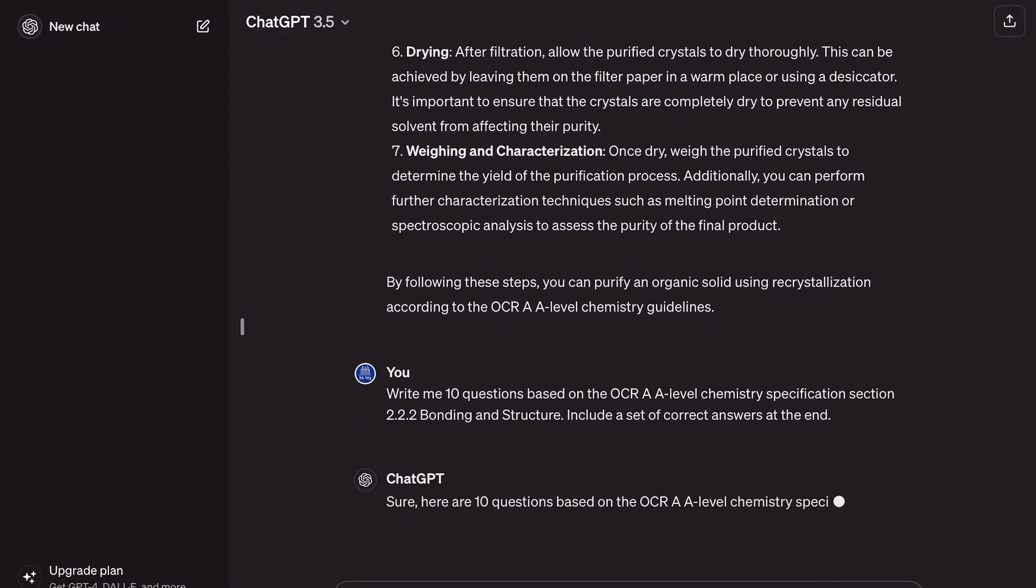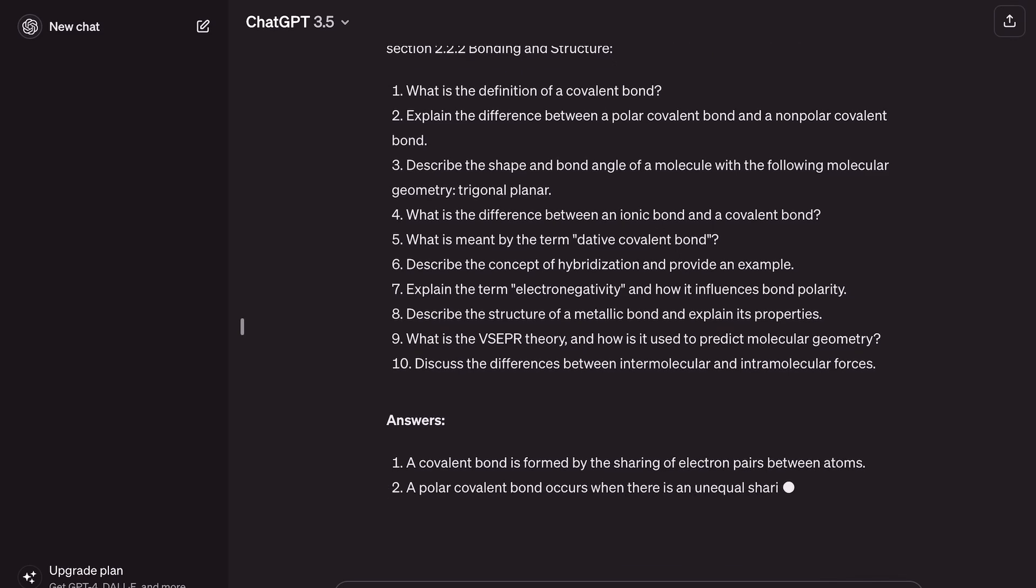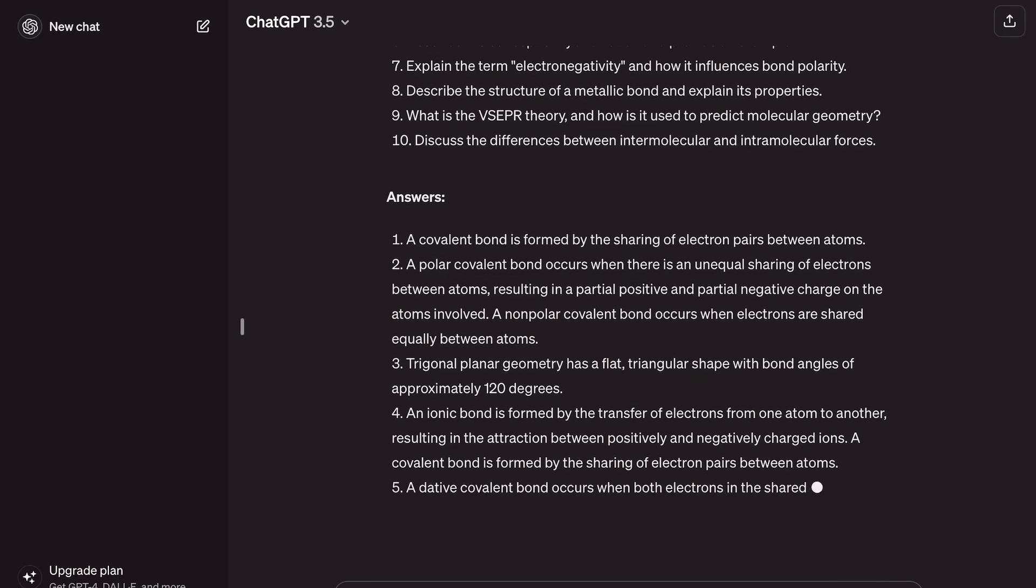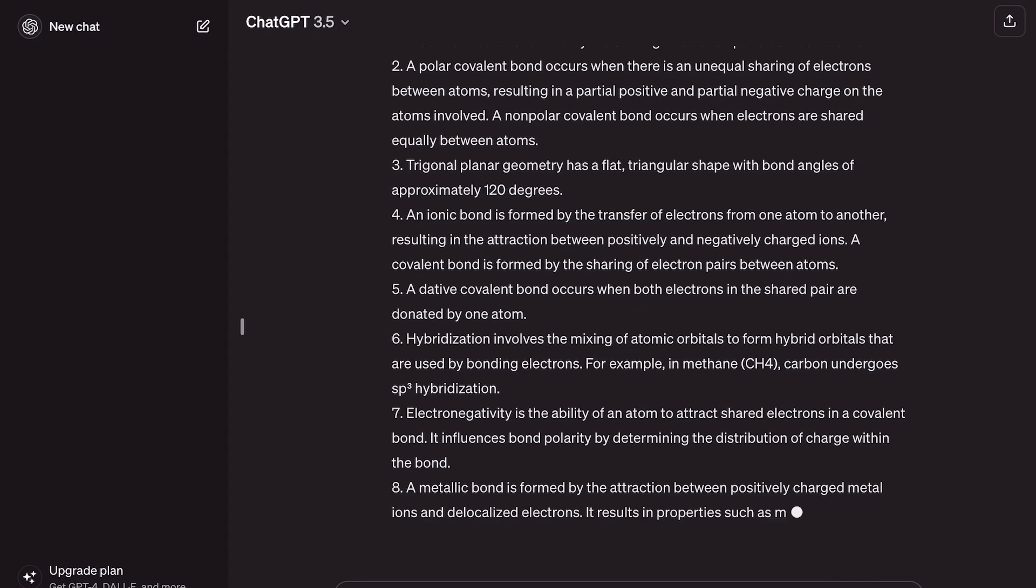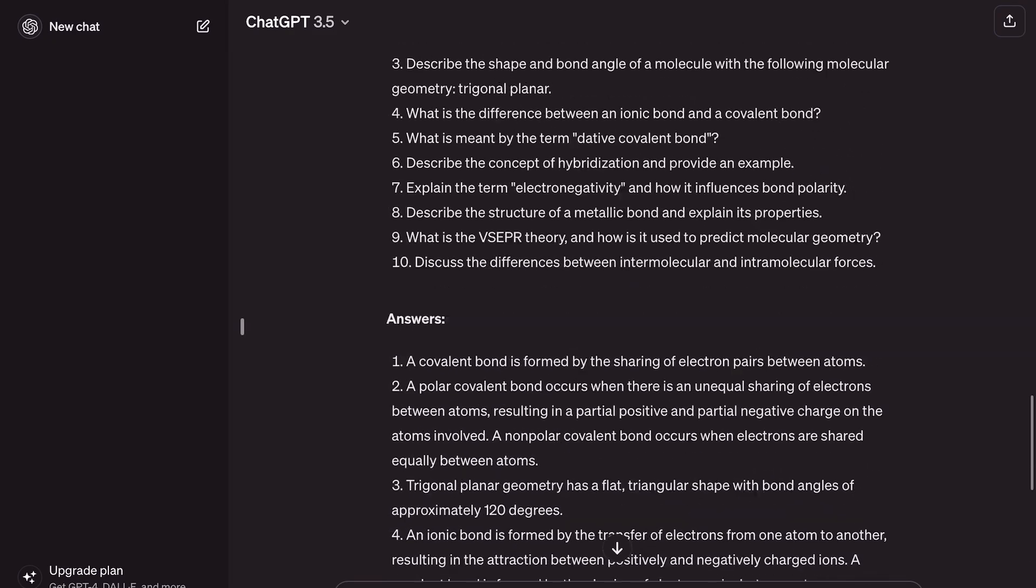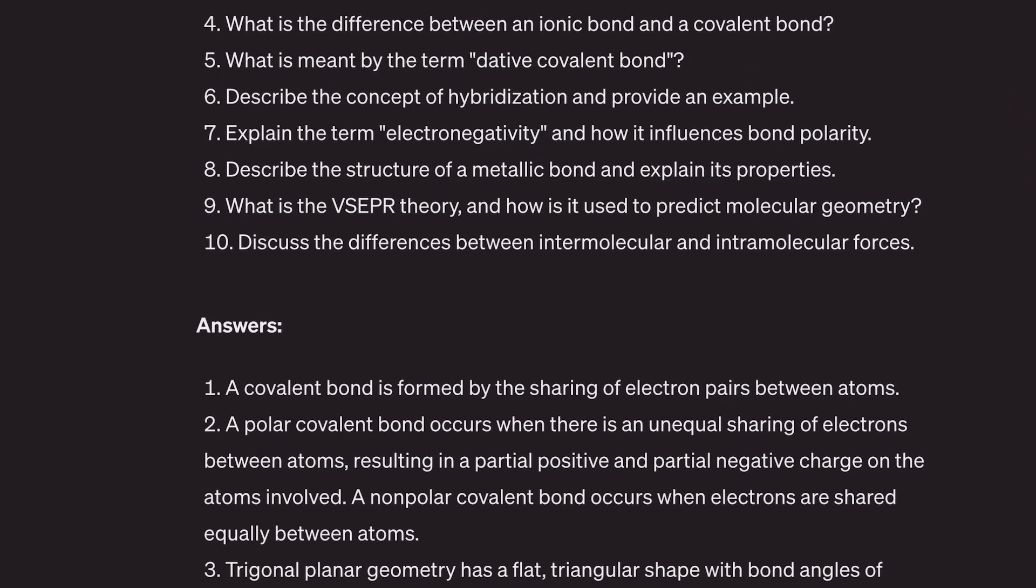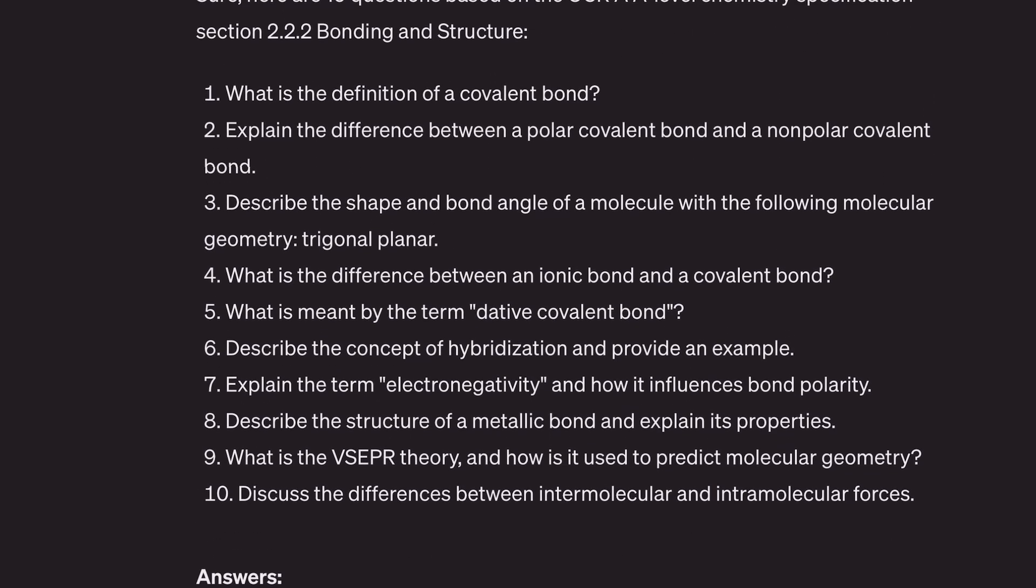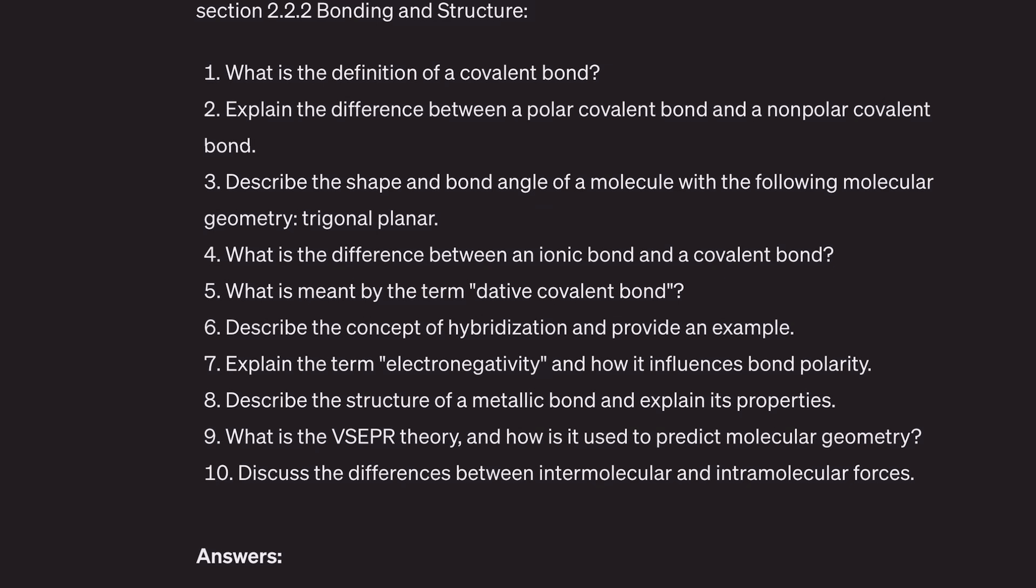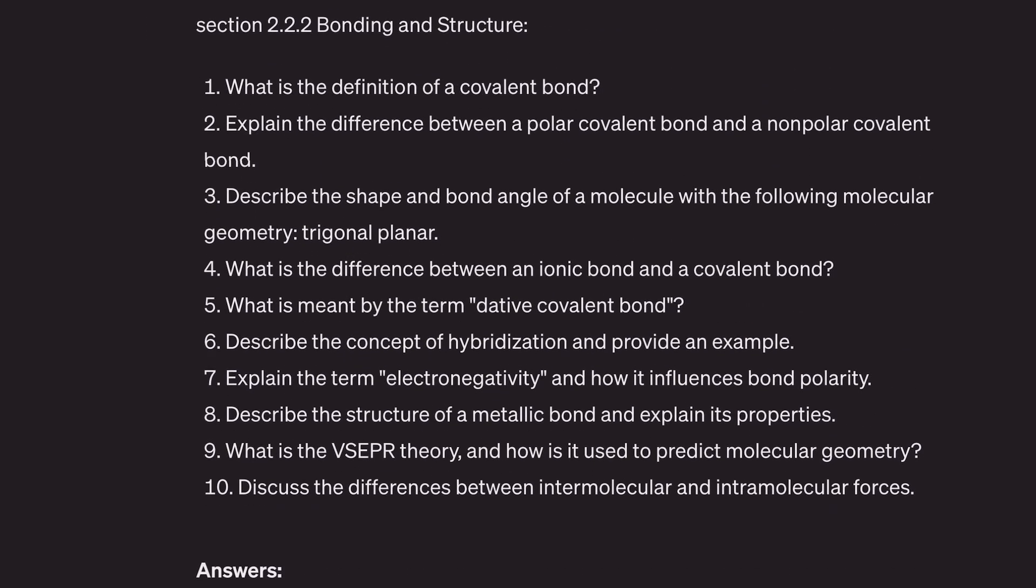Here are 10 questions. Definition of covalent bond, difference between polar and non-polar, difference between ionic and covalent, electronegativity. Do you know this is not bad? Ooh, hybridization, that's not on OCR. Okay, so it's not done a bad job. Some of these questions, let's have a look at these. So let's check out the questions first. Definition of covalent bond. Okay, if it's got the right one, covalent sharing of electron pairs between... I'm not sure that's enough definition, or enough detail on the definition I should say, for OCR, but it's not bad. Explain the difference between polar covalent bond and non-polar covalent bond. Yeah, let's see if it's done that. Unequal sharing of electron. Yeah, it's not bad. It's not really a definition we need.